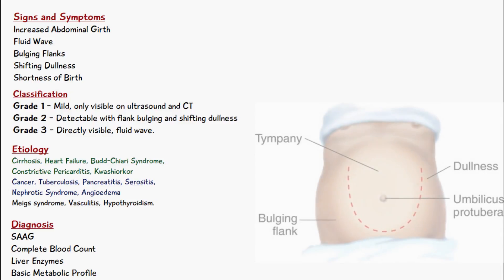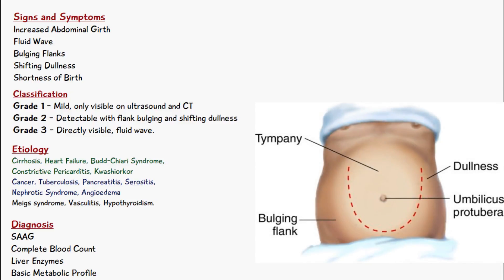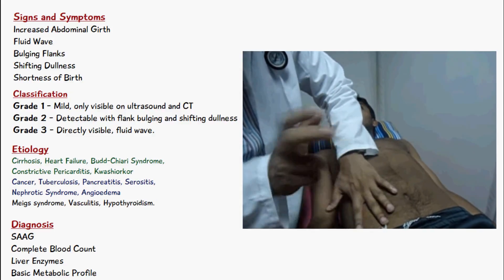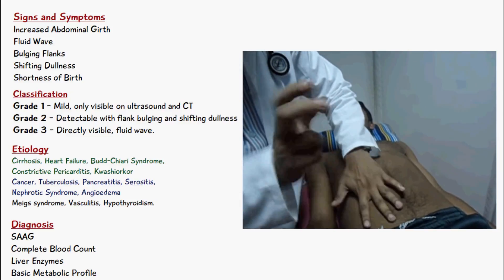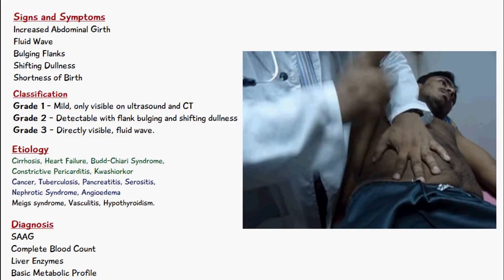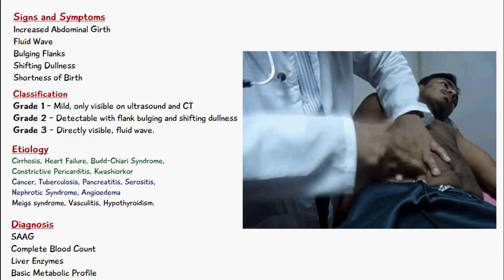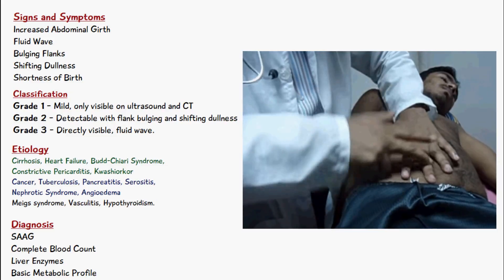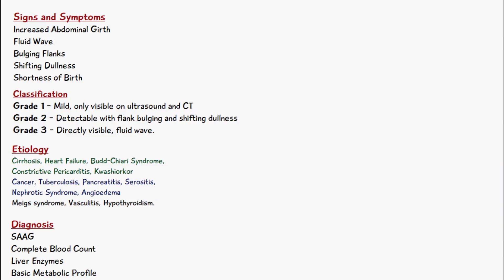Bulging flanks are another sign of ascites, where the sides of the abdomen are seen to bulge outwards, found in patients with a lot of fluid in their abdomen. Shifting dullness is another test: have the patient lie on their back and tap using fingers over the abdomen to find dullness. If dullness is suspected, mark the position, then have the patient lie on their side in the opposite direction and tap the same place. If it was fluid, it should have shifted upward. If the dullness remains in the same position, it likely indicates an abdominal mass or feces, but if it was ascites the dullness won't be heard in that same position because the fluid has moved upwards.